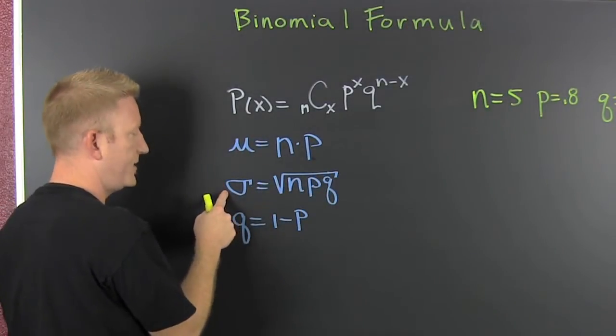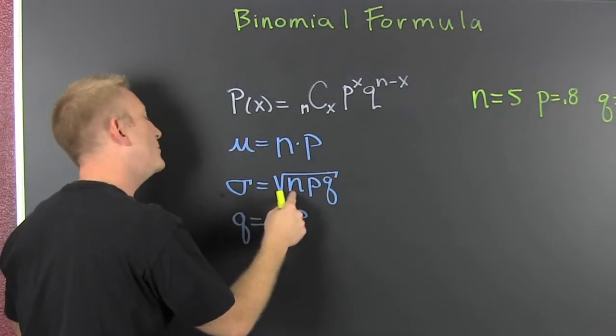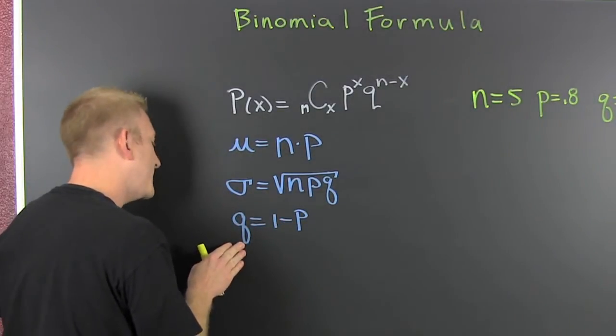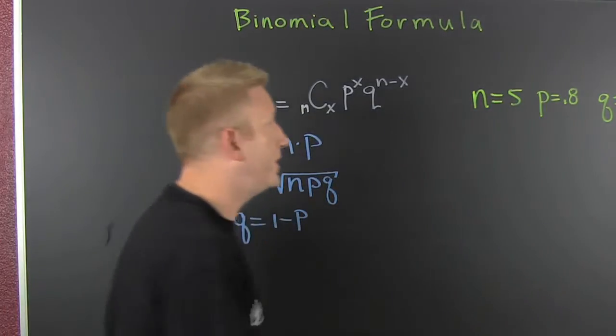Next, the standard deviation. Yes, this is my screwed up notation for sigma. That's going to be the square root of n times p times q. And we may need this little gem that q is equal to 1 minus p. And now we do an example.